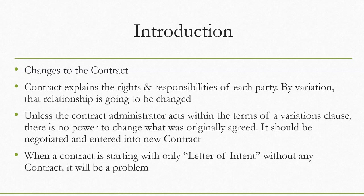When a contract is starting only with a letter of intent, without any formal contract, there will be a problem. After the tender procedure, the employer will normally send consent to the contractor through a letter of acceptance. Under a letter of intent, what they normally do is mention to the bidder that their bid has been accepted and to start the work. But there might be situations where a letter of acceptance cannot be issued — for example, if a site is not yet available due to incomplete land acquisition.